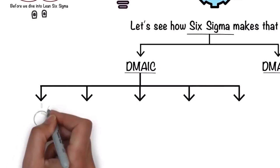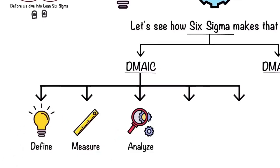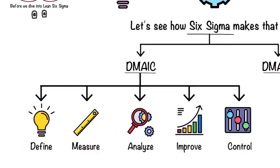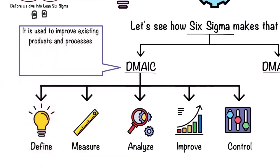DMAIC is an acronym for Define, Measure, Analyze, Improve, Control. It is used to improve existing products and processes so that it can meet the customer's requirements.